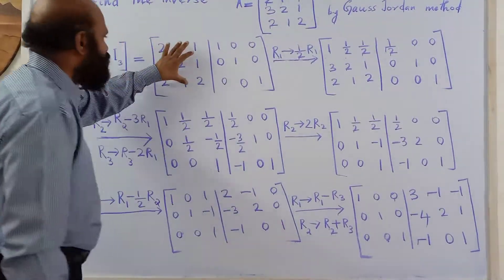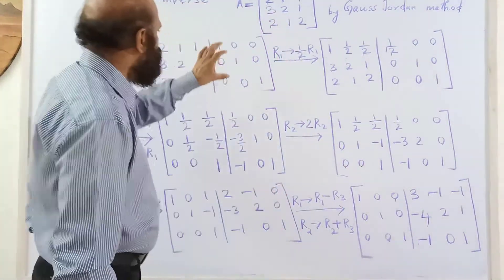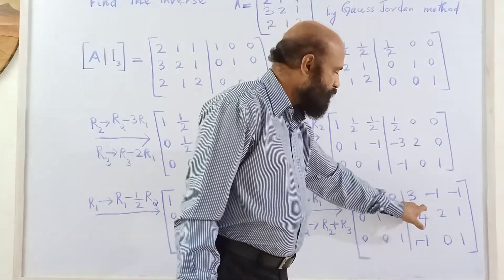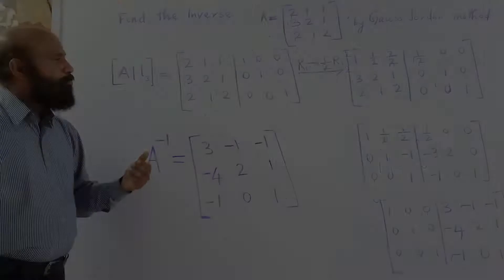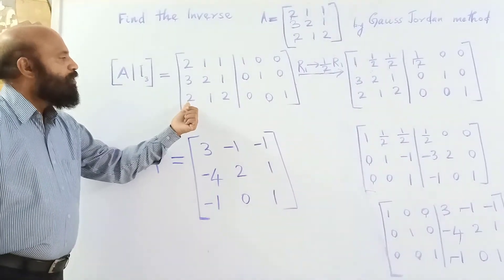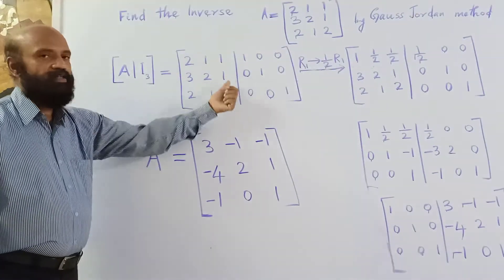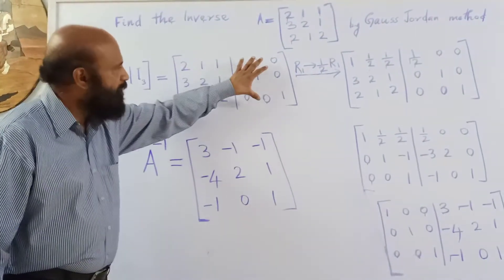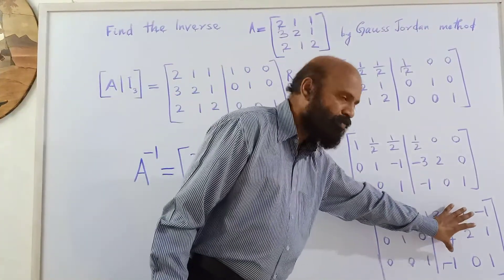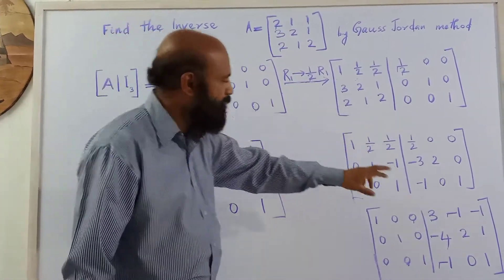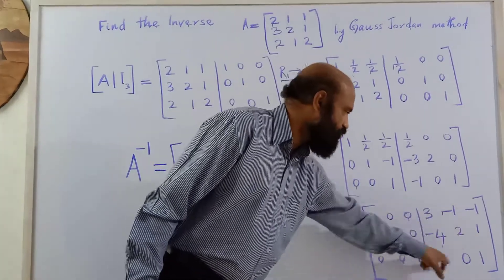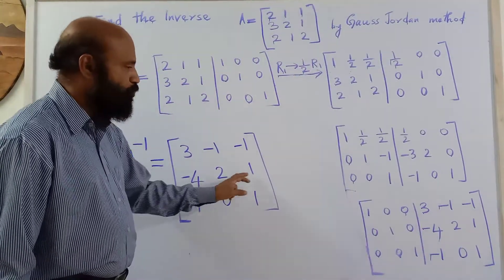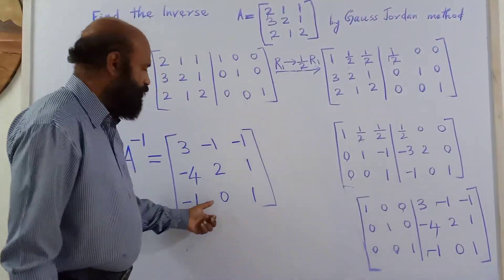The given matrix has been converted into the identity matrix by elementary row transformations, and correspondingly the identity matrix has been converted into the inverse of the given matrix. Therefore, A inverse equals [3, −1, −1 / −4, 2, 1 / −1, 0, 1].